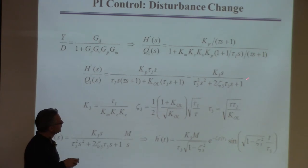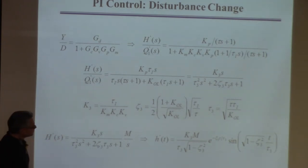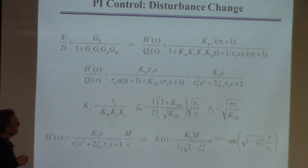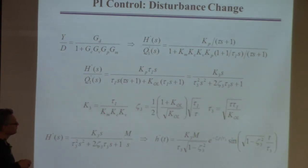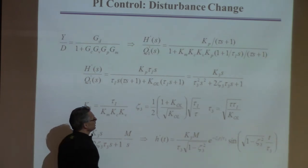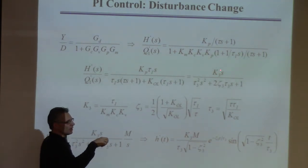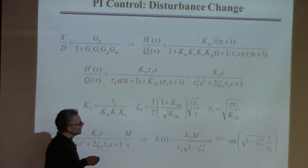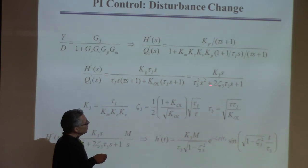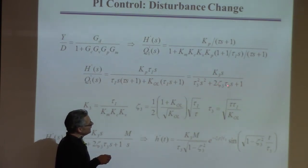After dividing by KOL, I can write it like this. K3 is that thing divided by KOL. Once I have the coefficient of S-to-the-zero equal to one, I can equate terms: whatever multiplies S-squared is tau_3-squared, so tau_3 is the square root of that. Whatever multiplies S is two-zeta-tau, so I can find zeta from that. It's a lot of algebra, but not intractable — just unpleasant.